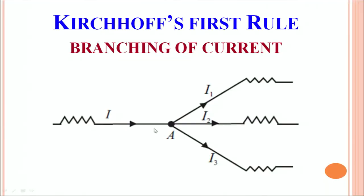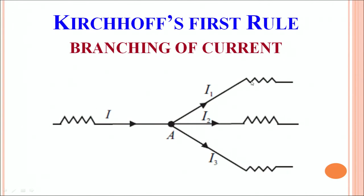Kirchhoff's first rule deals with branching of current. As you can see in this circuit, current I is proceeding towards a junction A. At junction A, it sees branching of 3 resistors — they are all in parallel. Depending on the value of the resistors in these 3 branches, the current is divided into I1, I2, and I3.